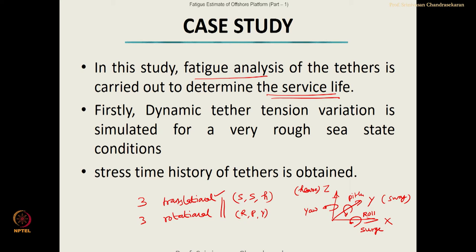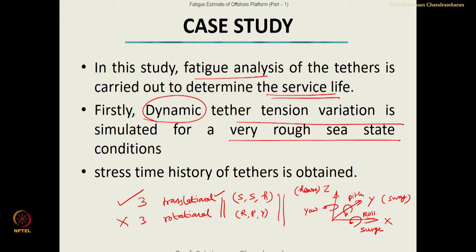Ball joints will restrain transfer of rotational degrees of freedom from the buoyant legs to the deck, while allowing transfer of translational degrees. When a triceratops is subjected to wave loads, buoyant legs will undergo displacements in 6 degrees of freedom. Since the buoyant legs are connected to the seabed using tethers, tension in the tethers varies with the dynamic history. We call this the dynamic tether tension variation.